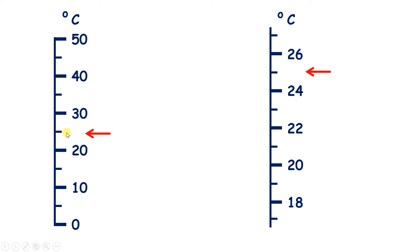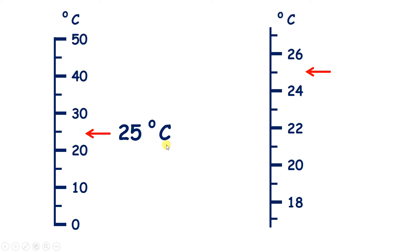Here the temperature is right in the middle of 20 and 30, so what's the temperature? Well, if every two markings we have 10 degrees, then every marking represents 5 degrees — so we have 5, 10, 15, 20, 25 — and that's where the arrow is pointing, so we have 25 degrees Celsius.